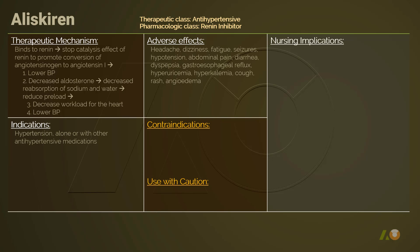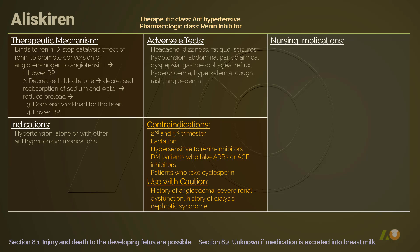As a medication working on RAS, aliskiren is not to be used during pregnancy or breastfeeding. Diabetic patients who use ARBs or ACE inhibitors are not good candidates for aliskiren therapy. Cyclosporin can increase aliskiren's effect, so patients who use cyclosporin should not take aliskiren.